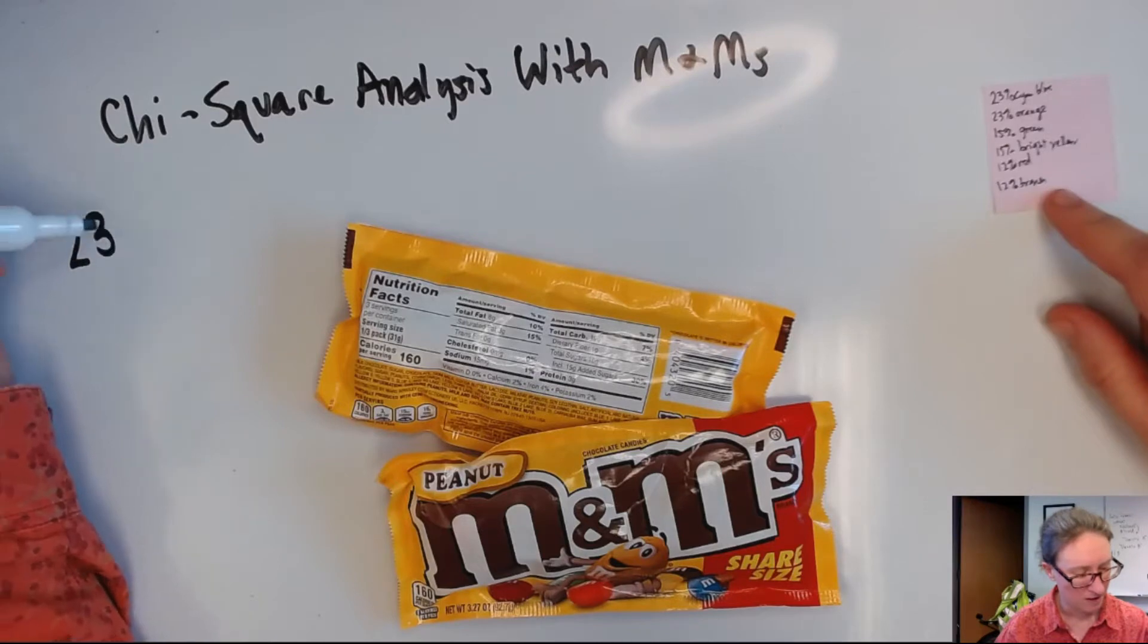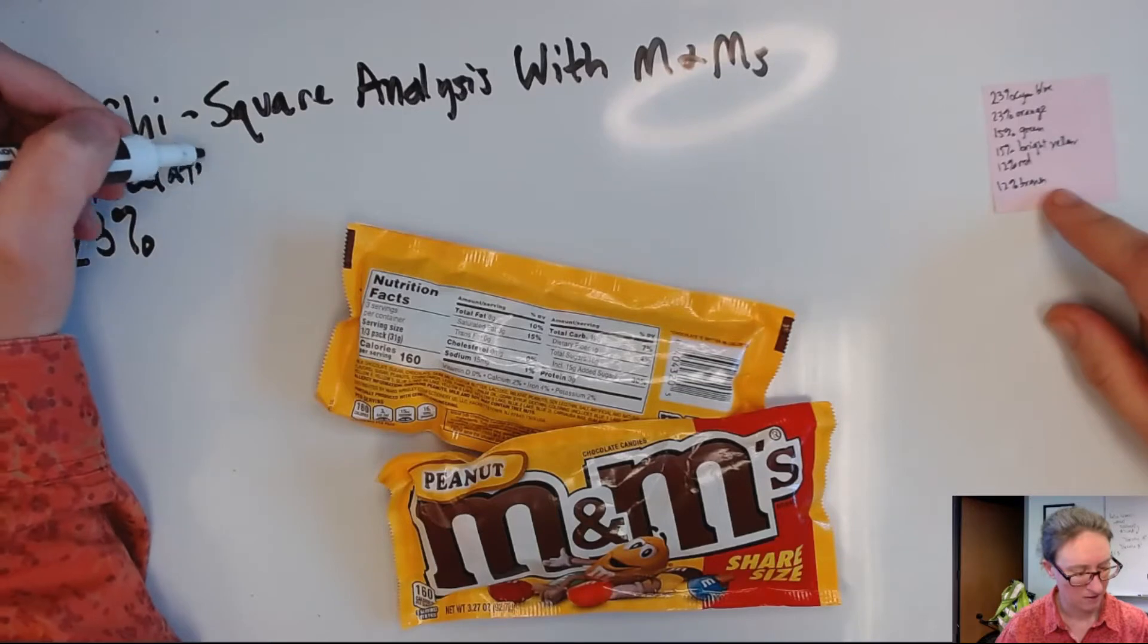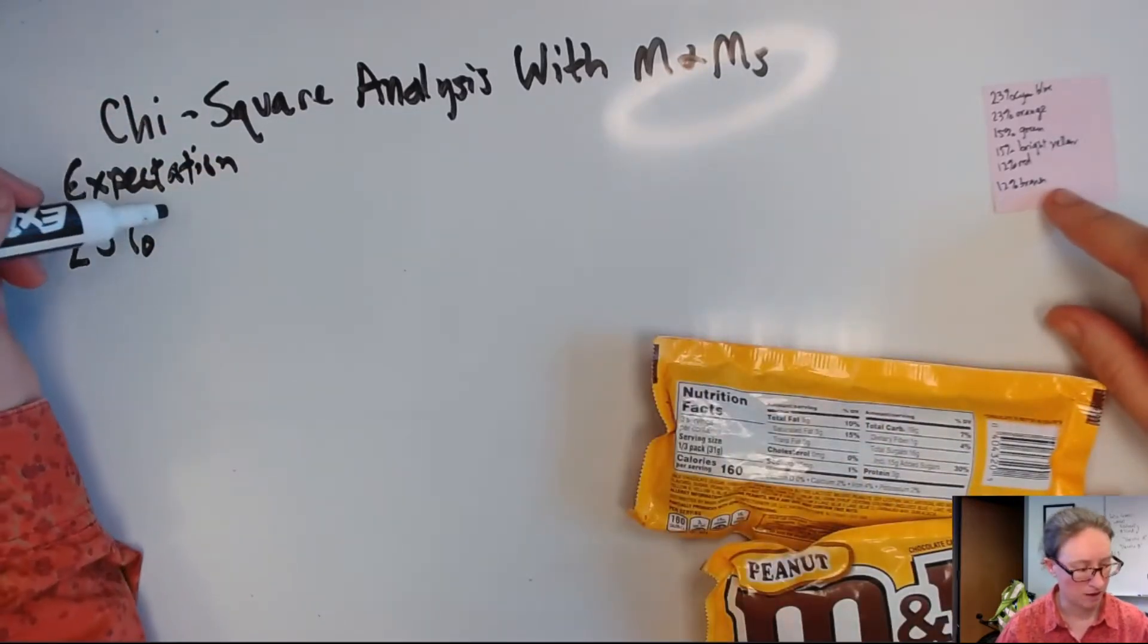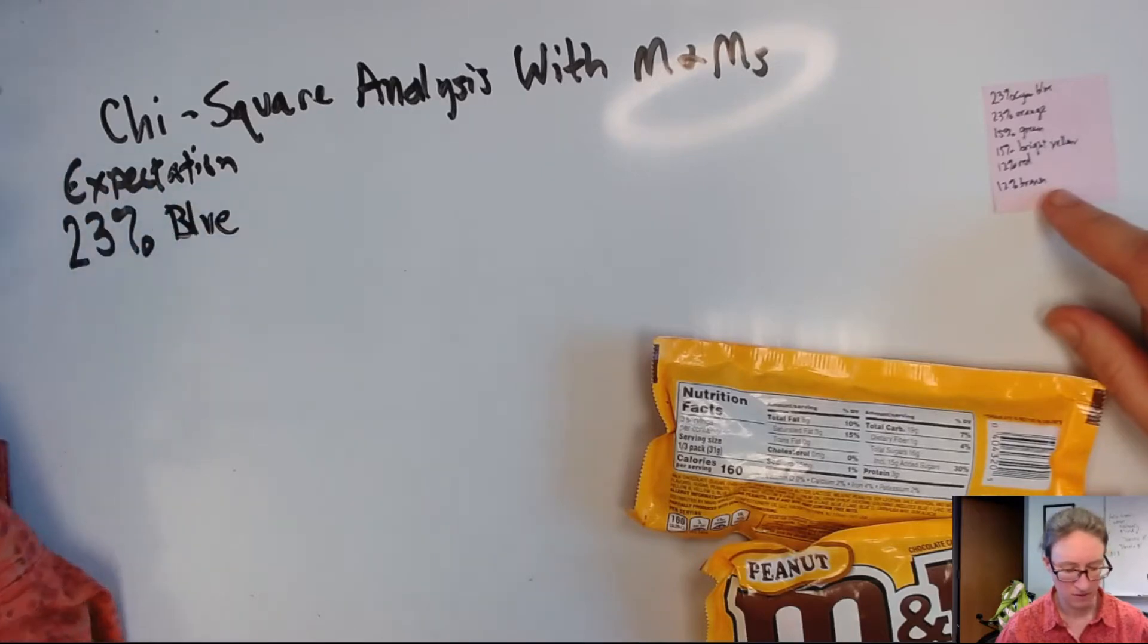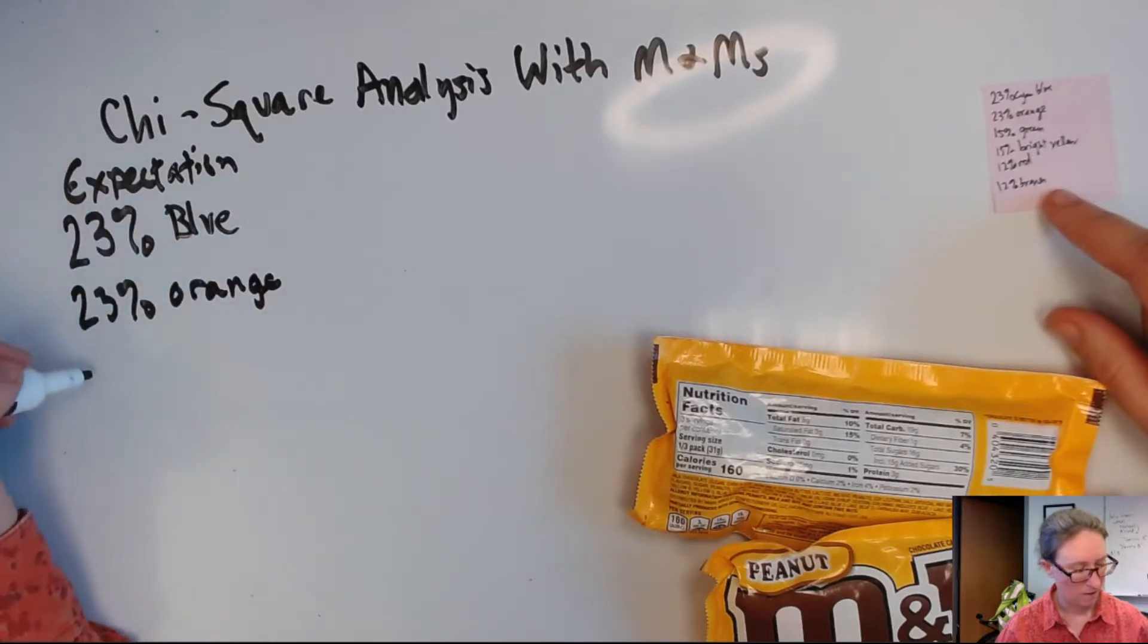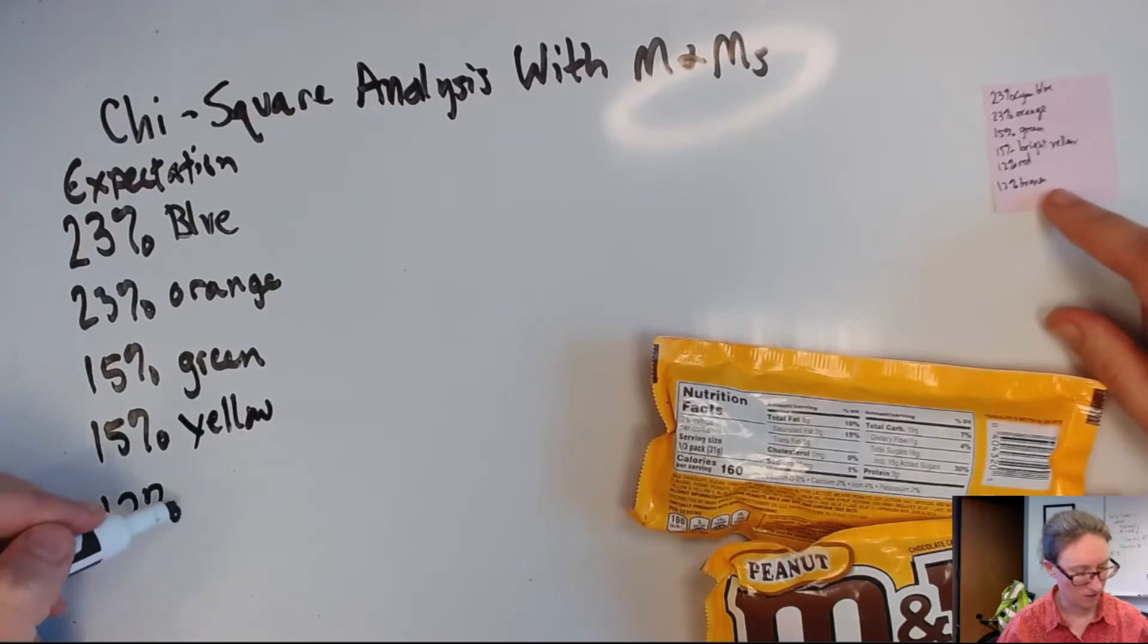So the expectation is that 23% of the M&Ms you get are blue, 23% are orange, 15% are green, 15% are yellow, 12% are red, and 12% are brown.